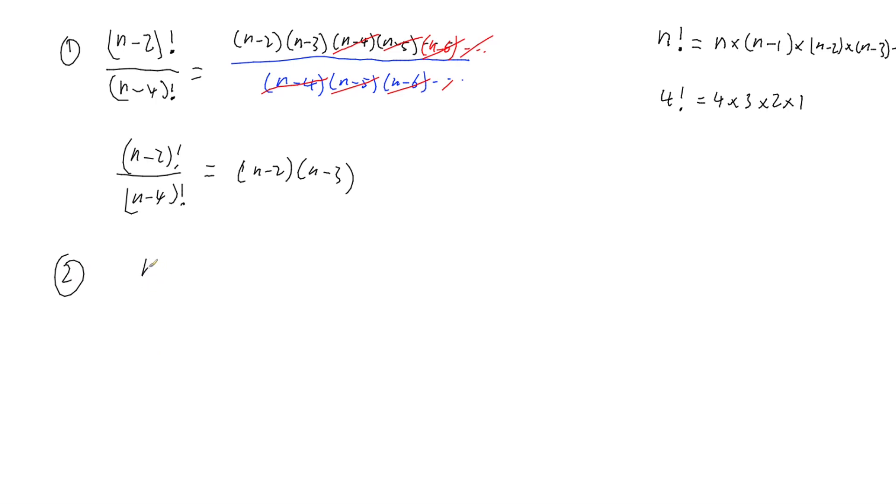What if I have (n+3)! over n!? Well, if we start with our denominator, because we've already looked at that, n! is just going to be n times (n-1) times (n-2) and so on until we reach 1.